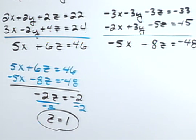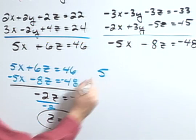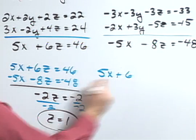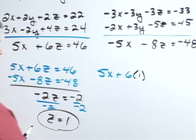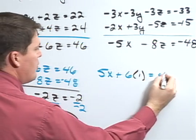So one of my variables is solved for. Well I can use this value to find a second variable, in this case x, by taking 5x plus 6, and instead of the z I'm going to use the 1, equals 46.